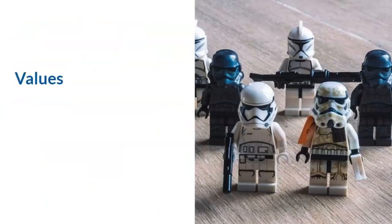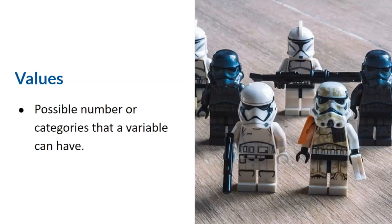Since these characteristics vary from person to person, variables will have values. Values are the possible number or categories that a variable can have. For my Star Wars fans out there, how many different types of stormtroopers are there? Way too many! This photo shows four different types. A shadow trooper, a clone trooper, a first order stormtrooper, and a sand trooper. In this case, the variable would be stormtrooper, and the values would be the four or more types of stormtroopers.